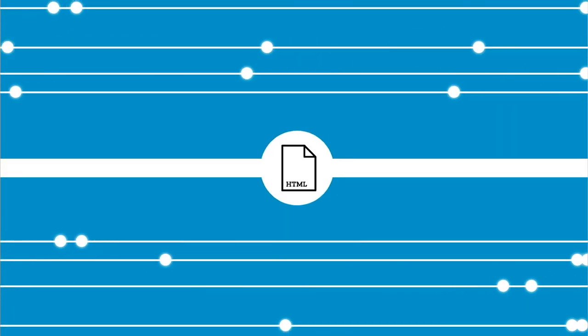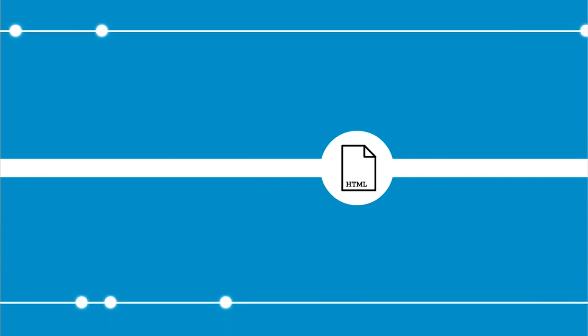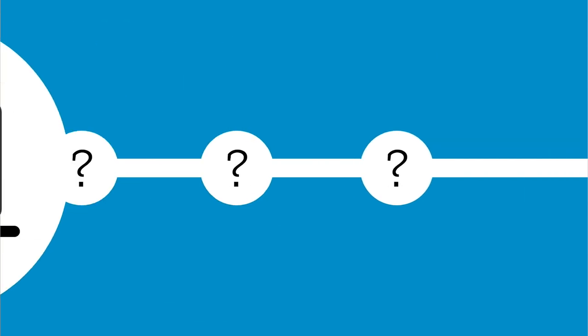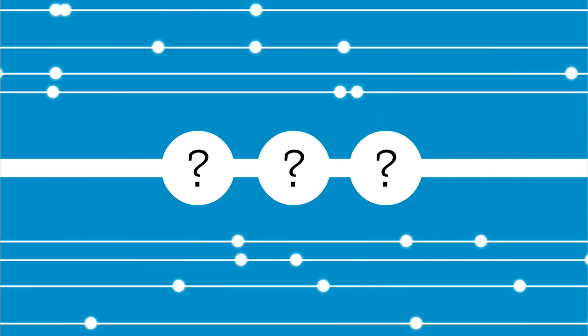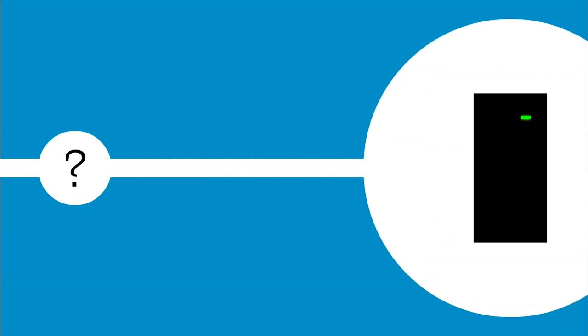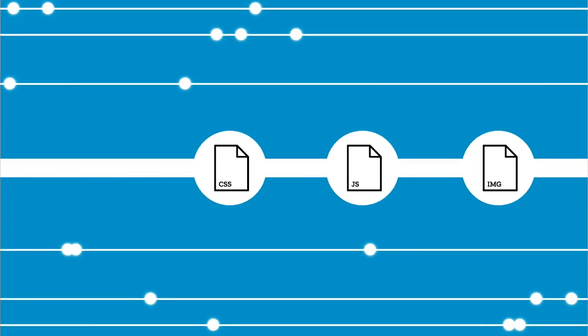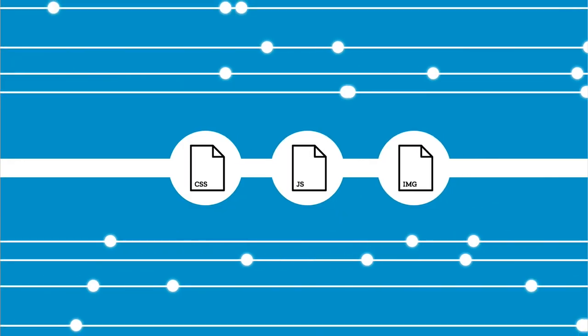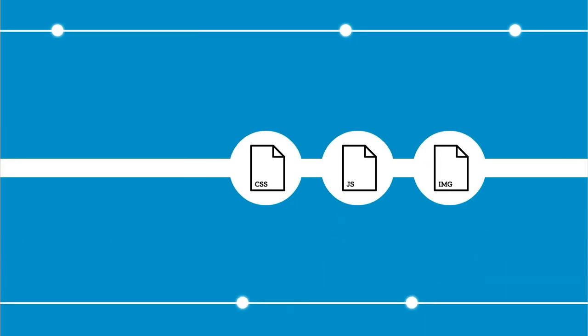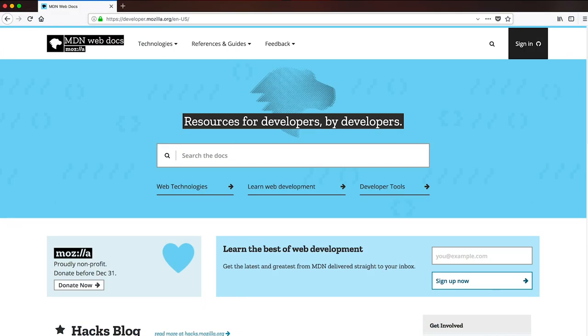Next, the browser retrieves the HTML document and reads it. Usually the HTML document contains further information telling the browser that it needs some extra resources to render the full page — for example, CSS to know how to display the document, images, or even scripts to attach special effects. Your browser will request all those extra resources, and once it gets them all, it will mix them together to at last display the web page you were expecting.